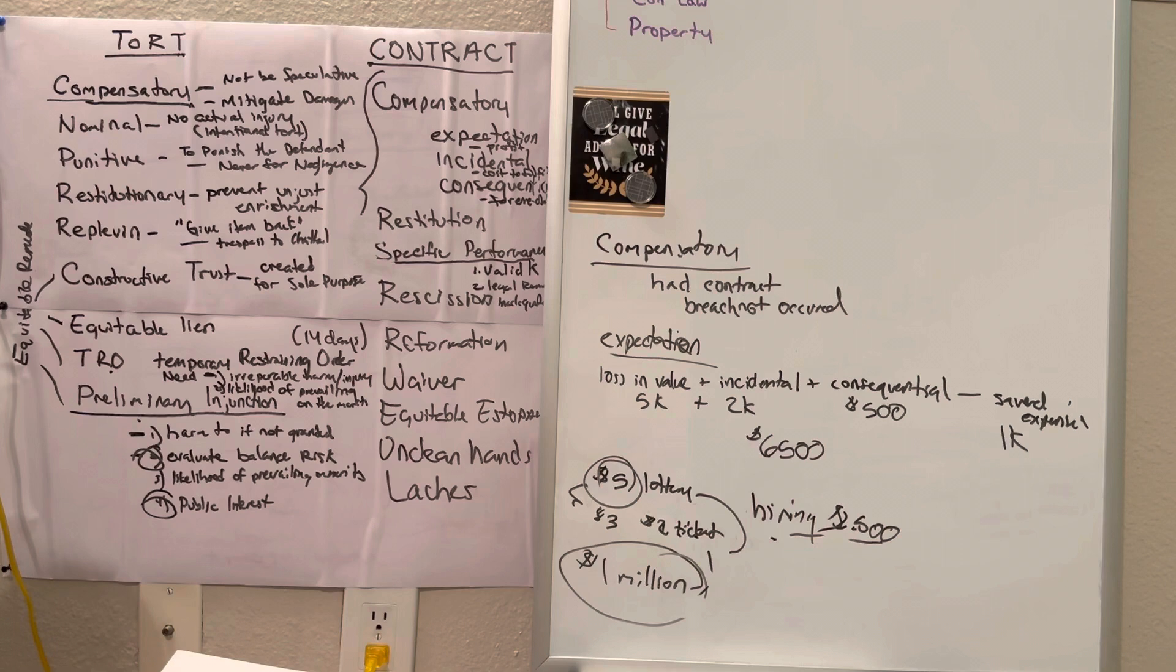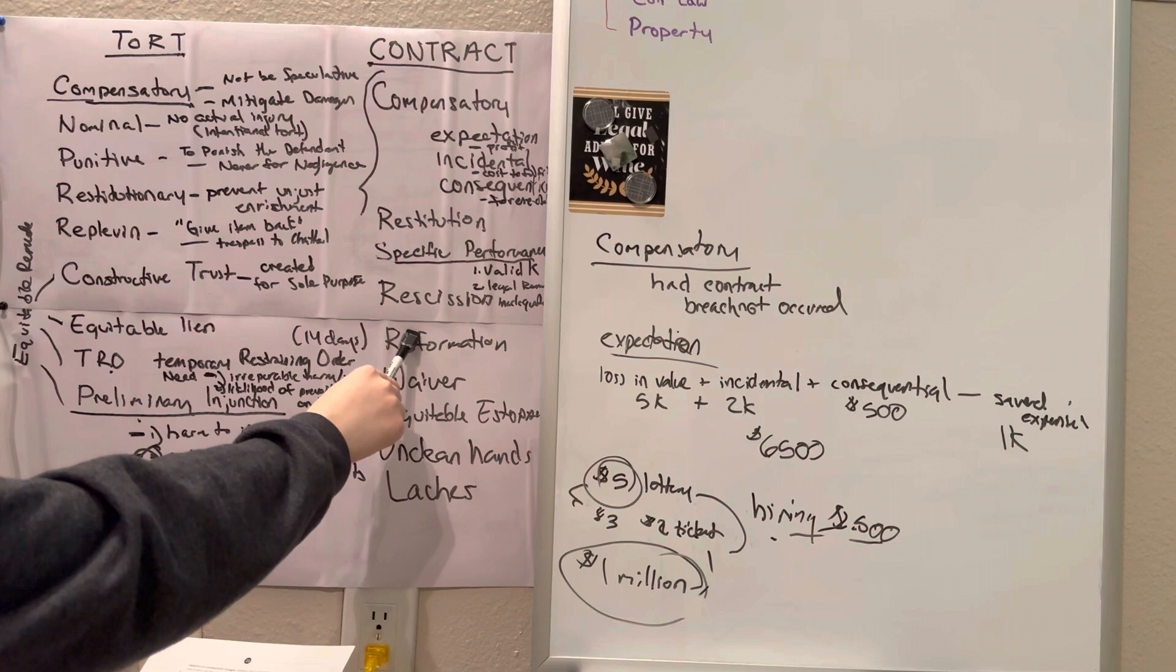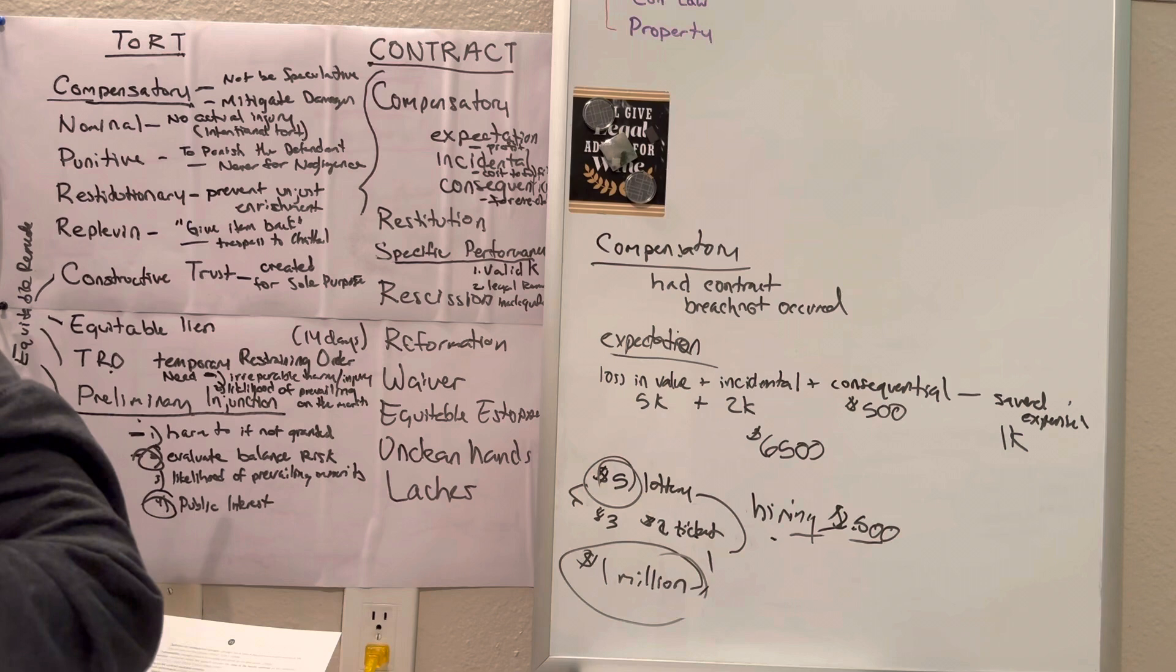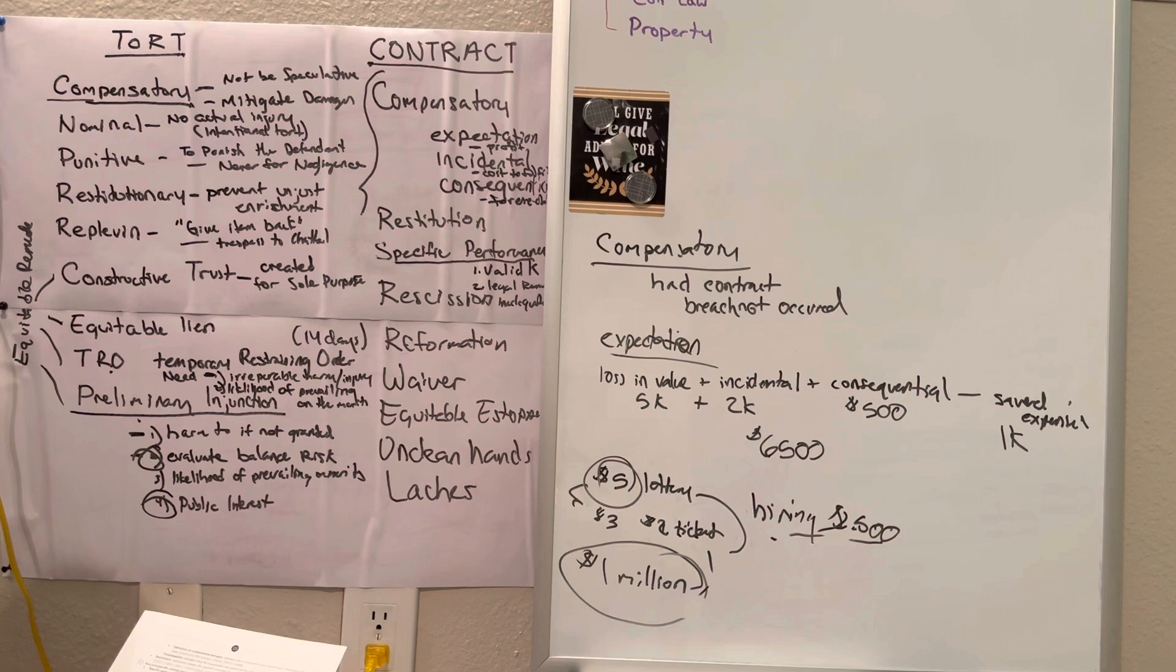Rescission is the unmaking of a contract. Rescission is granted in mutual mistake cases, unilateral mistake cases, or misrepresentation cases. Reformation is revising a contract. Reformation occurs when two or more parties entered into an agreement that is reduced in writing, but the writing does not match what the parties understood to be the agreement. This can occur because of a scrivener's error or misrepresentation. Bar exam tip: if you see reformation on a bar exam essay, note that the parol evidence rule does not apply.